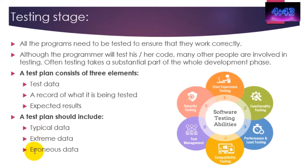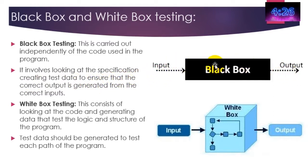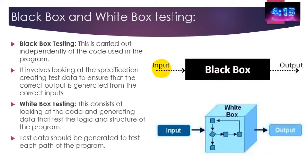And erroneous data, which we'll look at a bit later on. However, the bit of testing I want you to bear in mind is called black box and white box testing. Black box testing is carried out independently of the code itself — essentially you put some data into the black box and you get some data out. If the output matches what you were expecting, you know the test has worked properly. You don't get an insight into how the data works; you simply input the data and expect something out.